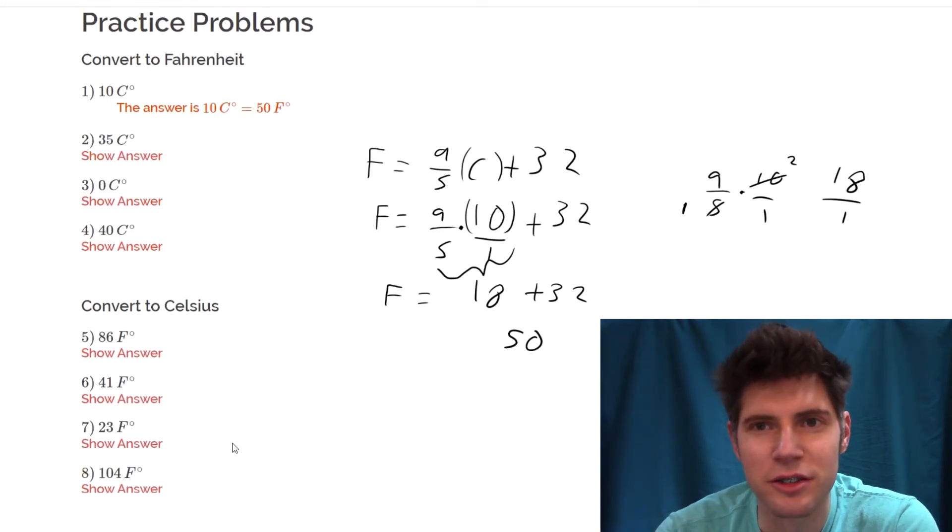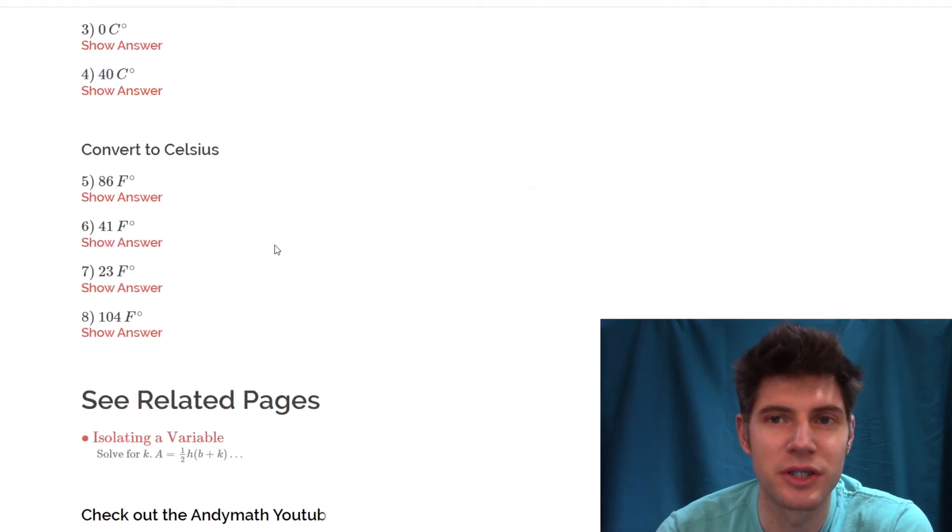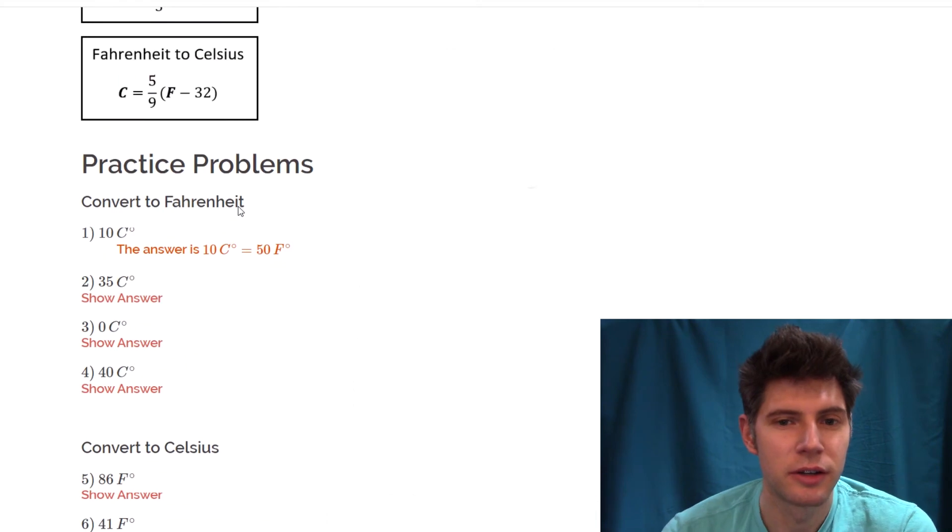Next, let's do number five. Now we're going to convert to Celsius. So we want to use the other formula, Fahrenheit to Celsius: C equals five-ninths times F minus 32.